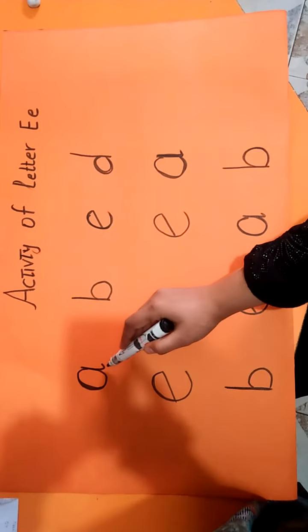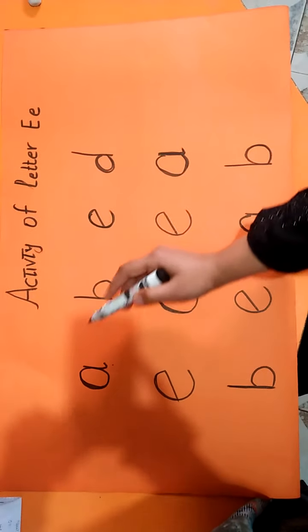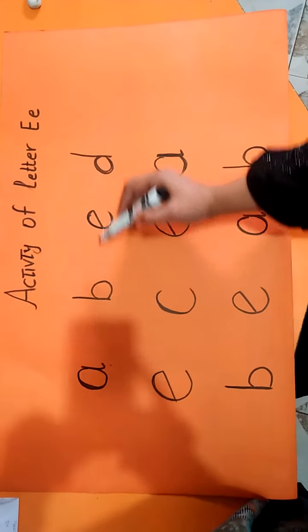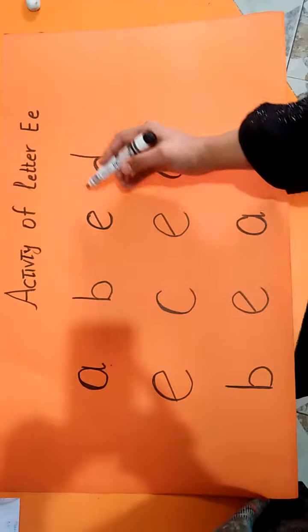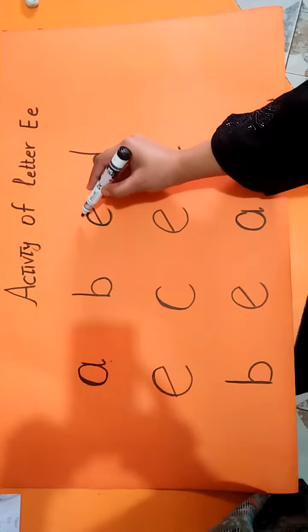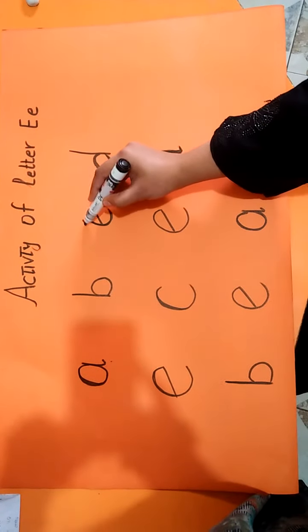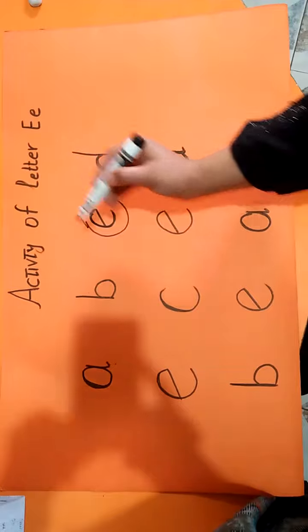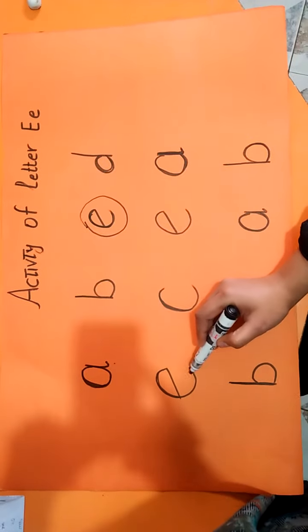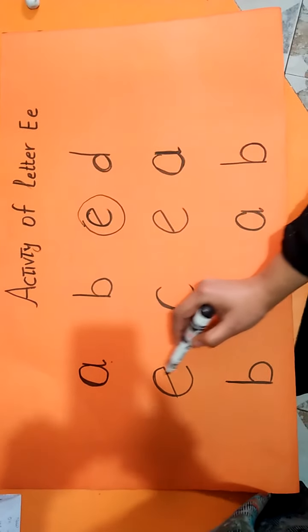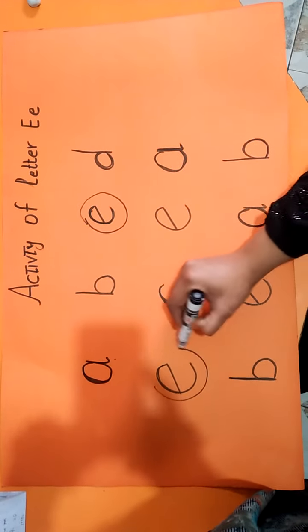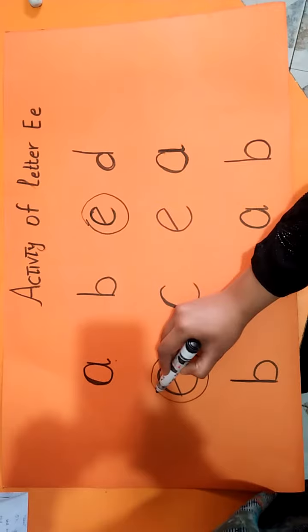What is this? A. What is this? B. What is this? This is E. We will circle the E. What is this? This is also E. We will circle the E.